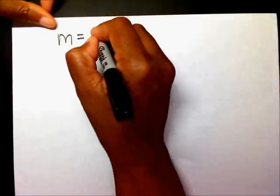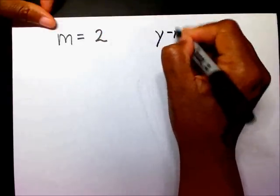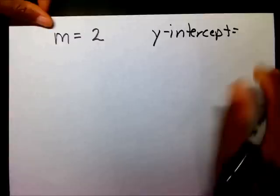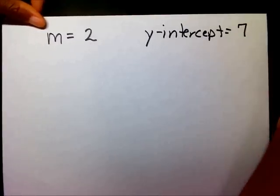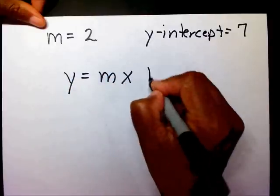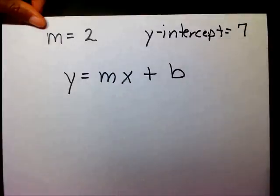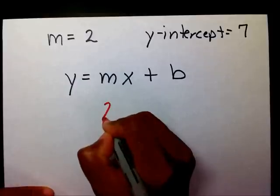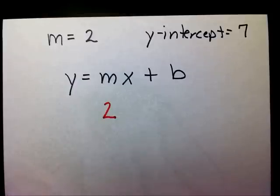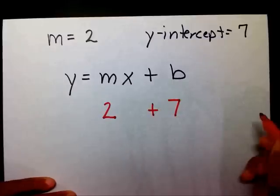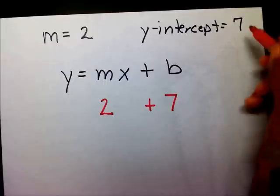If the slope equals 2 and the y-intercept equals 7, I know that y equals mx plus b. I'm going to substitute 2 in for m and 7 in for b. That is a plus 7 because it is a positive 7.